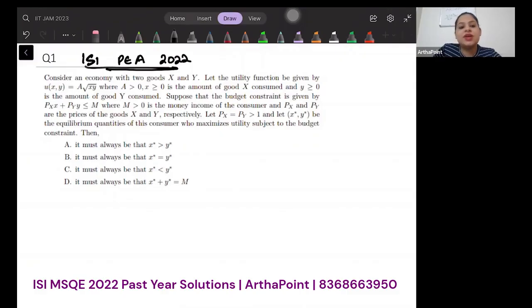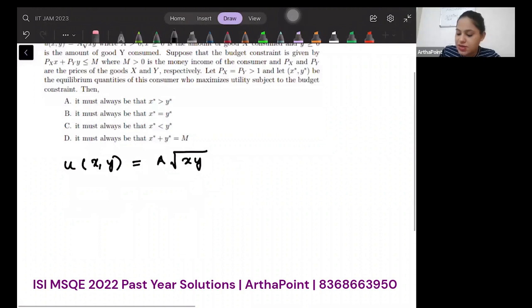Consider an economy with two goods x and y. Let the utility function be given by a√(xy) where a > 0, x ≥ 0, and x is the amount of good x and y is the amount of good y. You're also given a budget equation: px·x + py·y ≤ m, where m is the income of the consumer.